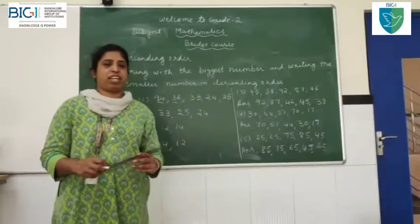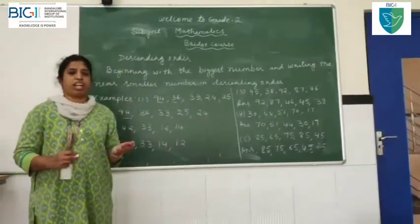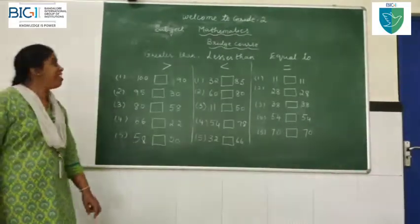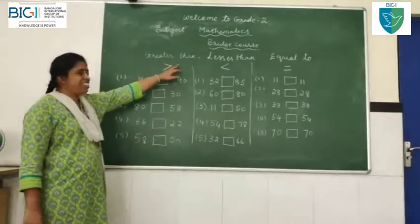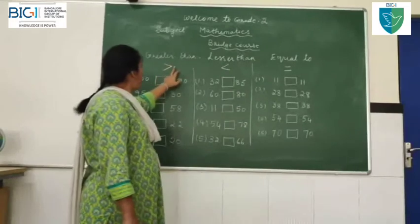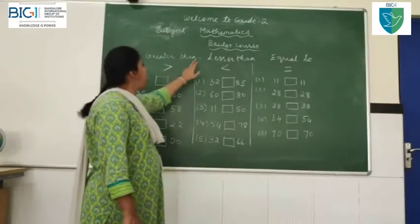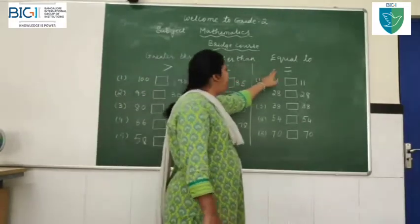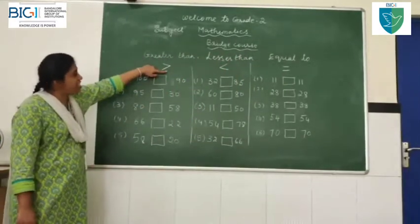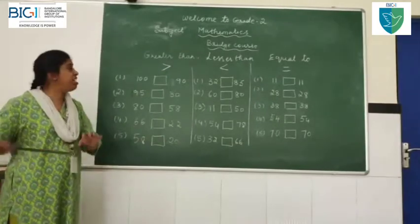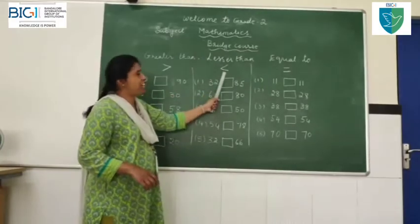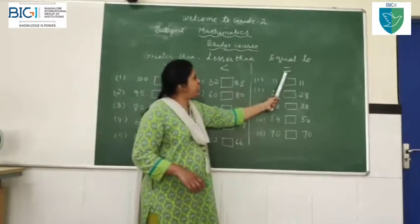Okay, children. Next, I will be teaching you greater than, lesser than, equal to. Now, children, now we will be learning greater than, lesser than, equal to. You all have learned this before, but now we are teaching you again. The symbol of greater than is this. Greater than symbol is this. Less than symbol is this. Equal to symbol is this.